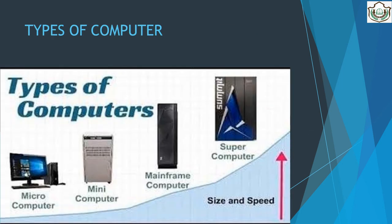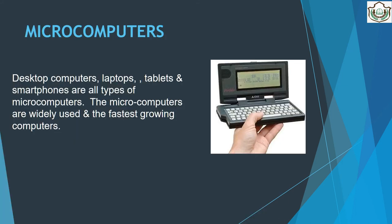Now, types of computers. Computers can be classified into the following types with respect to their size, speed, storage capacity and cost. Micro computers are small in size and cheap. They are mainly used in homes, schools, offices, shops, banks, etc.